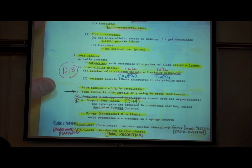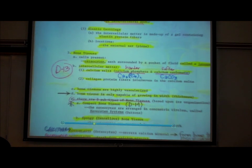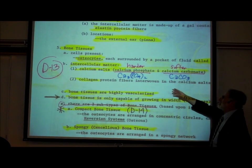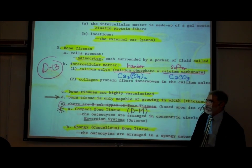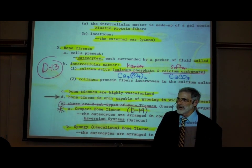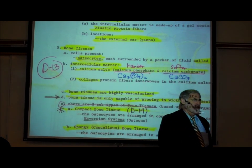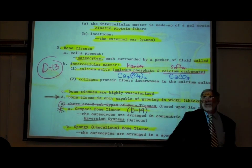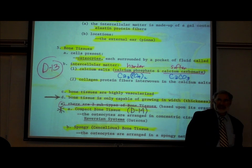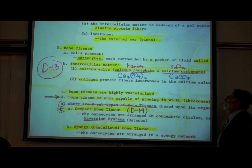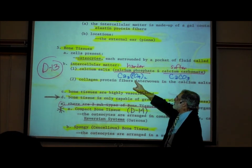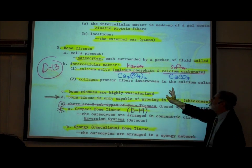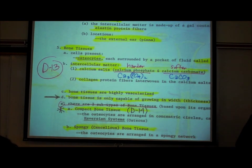We first learned about calcium phosphate and calcium carbonate back on page E1, when we were learning about the functions of the skeletal system. In this anatomy class we'll write out the full terms, but in physiology you'd see the molecular formulas: calcium phosphate is Ca₃(PO₄)₂ and calcium carbonate is CaCO₃. You don't have to know that for this class.